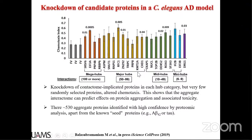We could see that some candidates across hub categories showed significant protective roles against aggregation. However, the challenge is that we have more than 600 protein nodes in the interactome and 7,000 interacting pairs, so we cannot practically knock down all these proteins to find which are significant trackable targets. This is where we need a method to understand what the highly influential proteins are in that particular contactome.